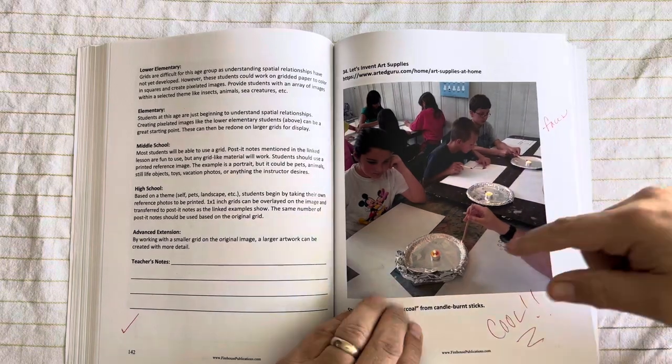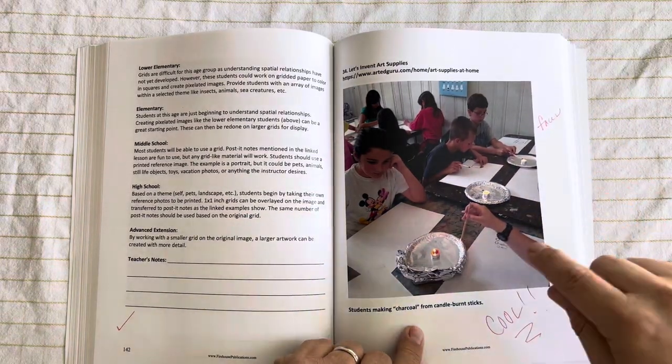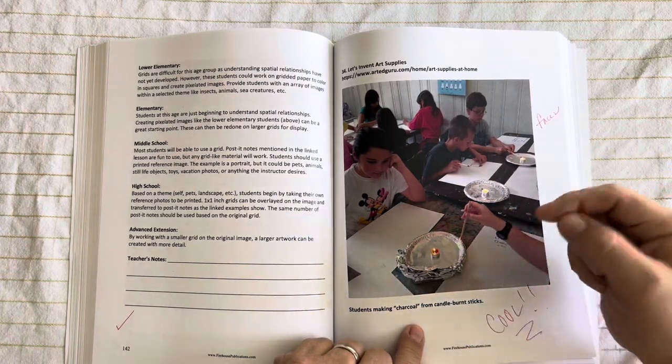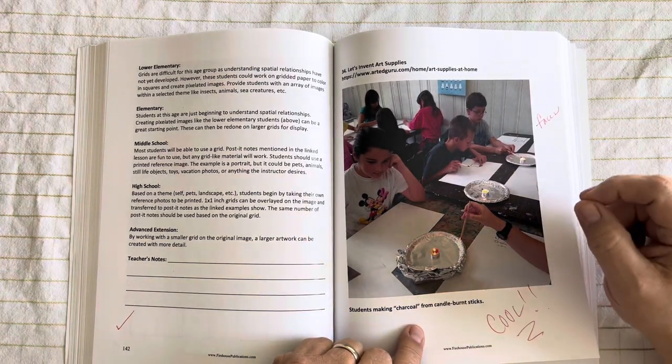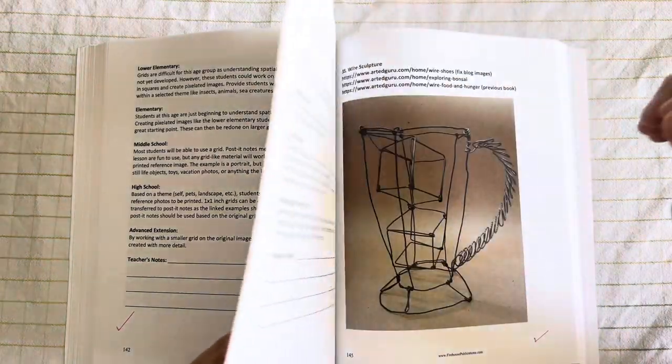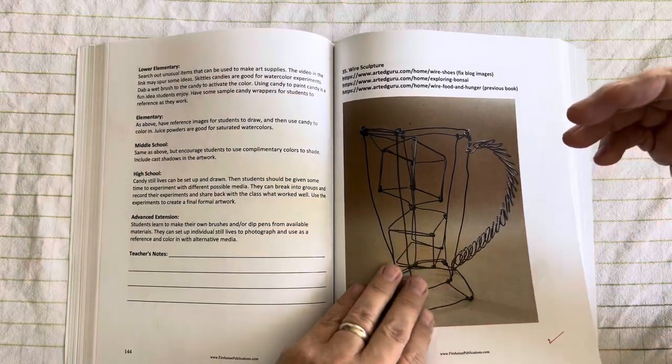Inventing your own art supplies. Here my younger students are actually making charcoal. We use a candle and a stick and they burn that stick. And we have buckets of water right next to them in case the fire goes a little bit out of control. They just throw the stick into the water. But we do it very safely with lots of supervision.